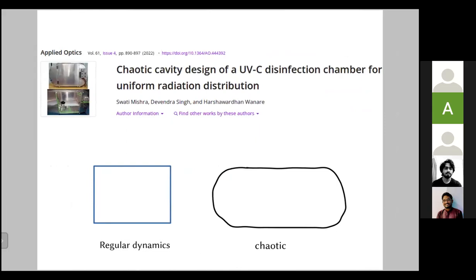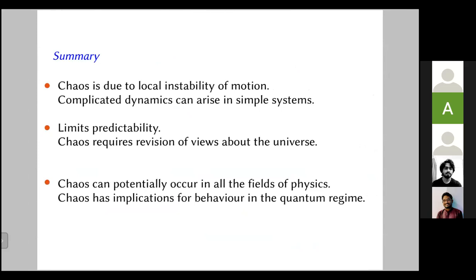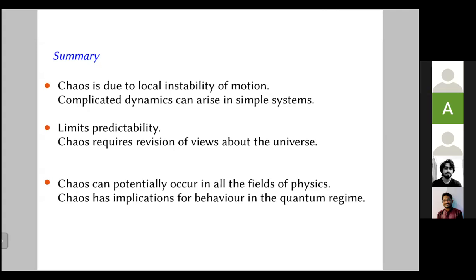Recently, one of my friends at IIT Kanpur used chaotic properties to design a disinfection chamber. To summarize: chaos involves seemingly random motion from deterministic equations, limits predictability, and requires us to revise our opinions about the deterministic nature of the universe. Chaotic dynamics is not a subfield of physics — it occurs in all areas of physics: atomic, molecular, nuclear, and has implications in quantum regimes as well. Thank you — if you have questions, I'll answer them.